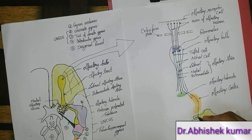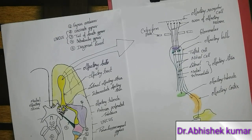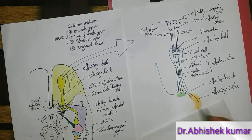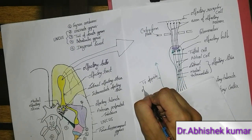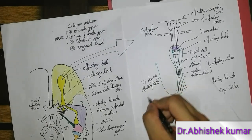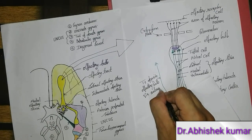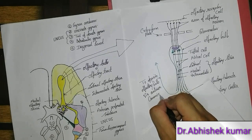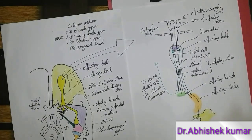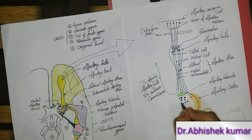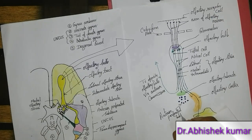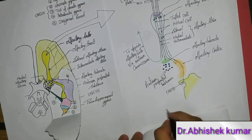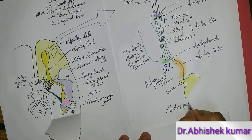The lateral olfactory stria — one neuron will terminate in the uncus. The medial olfactory stria will go to the opposite olfactory bulb via the anterior commissure. This dotted structure is the anterior perforated substance, which is present in the inferior aspect of the base of the brain. This completes our olfactory pathway.